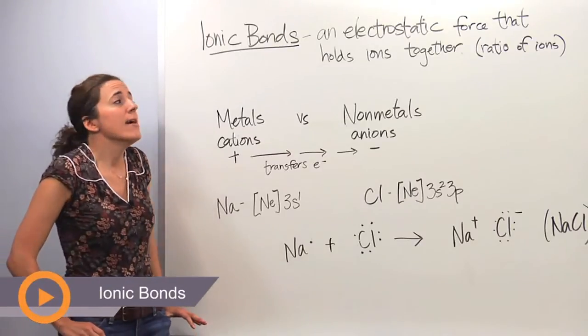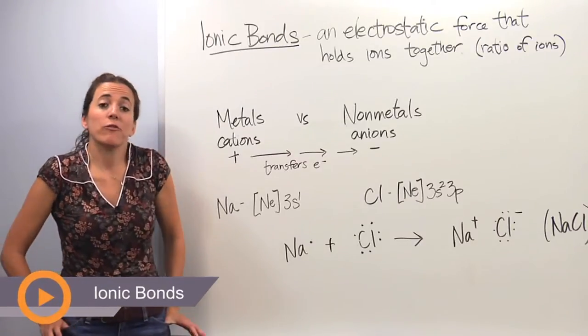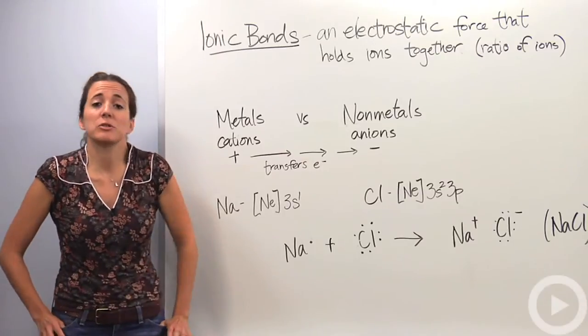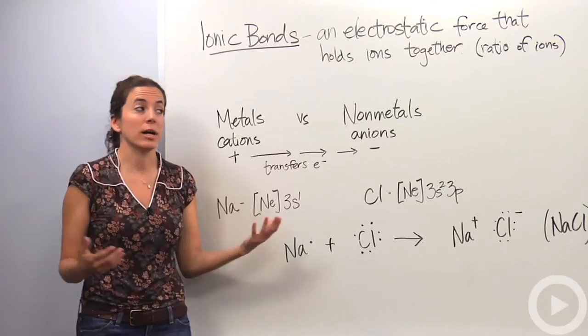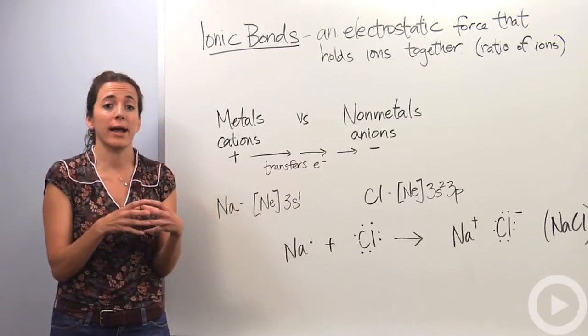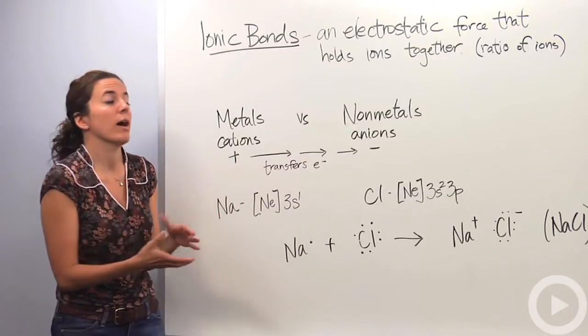All right, so we're going to talk about ionic bonds. An ionic bond is actually an electrostatic force that holds two ions together. And don't forget, ions are charged particles. They actually give or receive extra electrons. So an ionic bond is the force that holds these ions together in a crystal. It's a ratio of ions.